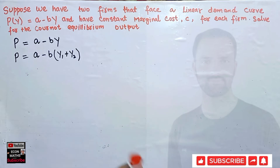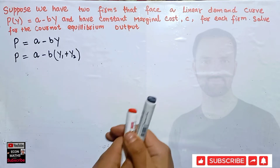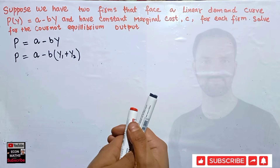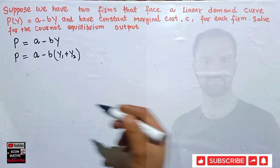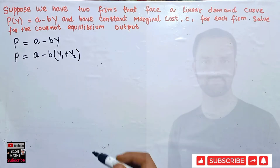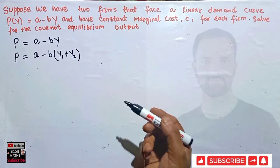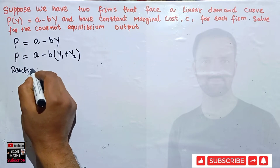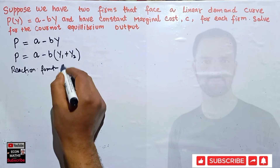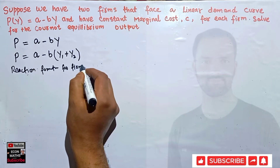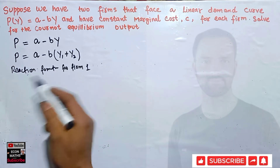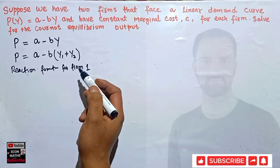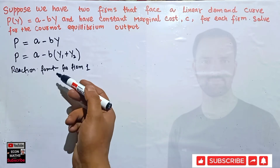To find the Cournot equilibrium output, we need to find the reaction functions — also called best response functions. We'll find the reaction function for firm one first. To do that, we need to find the profit function for firm one, which requires finding both the total revenue and total cost for firm one.